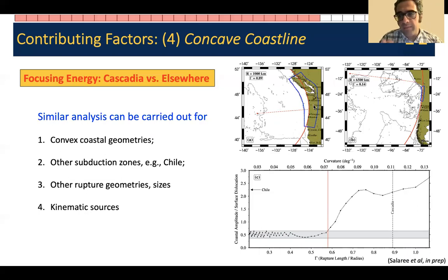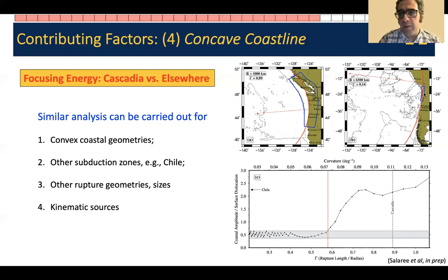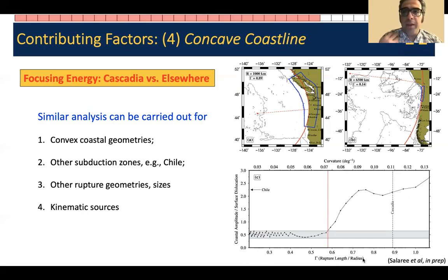Testing this in the real world — here is Cascadia, with the boundaries of the subduction zone shown in blue, and the red circle shows the geographic curvature of the Cascadia coastline — there's a nice match. On the right I show the circle of curvature for northern Chile, where several magnitude 8-plus earthquakes and tsunamis have occurred historically. You don't see the same energy focusing in Chile because of its very large radius of curvature. Plotting coastal tsunami amplitude against the ratio of rupture length to radius — to account for that contribution — Cascadia is well to the right, whereas Chile barely shows up. So this effect is more pronounced for Cascadia.